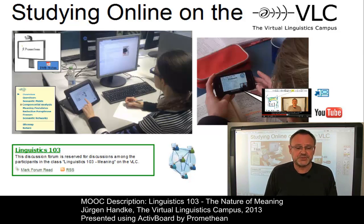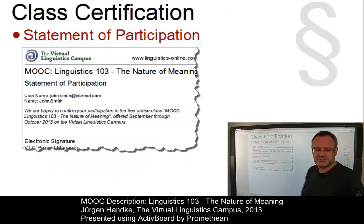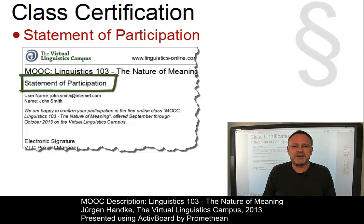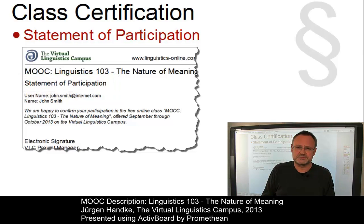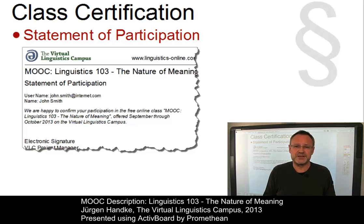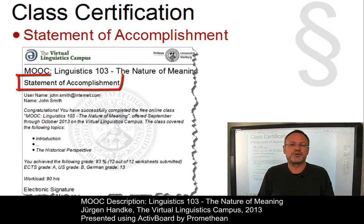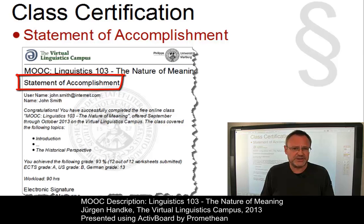And if you are successful, you will be given a certificate. All participants who actively participate in our class will receive the so-called Statement of Participation, issued by the Virtual Linguistics Campus — and it is for regular participation. But if you want more, you have to invest more work and a very small amount of money. As a result, you will be given the Qualified Statement of Accomplishment, issued by Marburg University in conjunction with our Virtual Linguistics Campus.